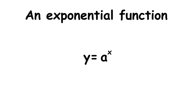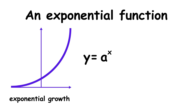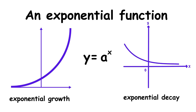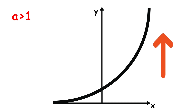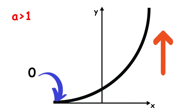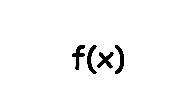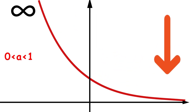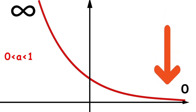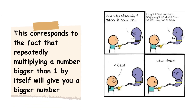An exponential function is a function of the form y equals a to the power of x. This can be used to model either exponential growth or exponential decay, depending on whether a is greater than or less than 1. For a greater than 1, the function grows as its input increases, approaching 0 on the left and rising toward infinity on the right. For 0 less than a less than 1, the function trends downward from positive infinity on the left and decays asymptotically toward 0 on the right.